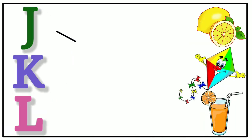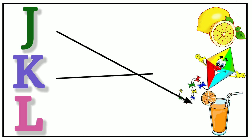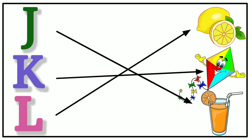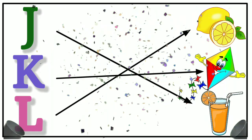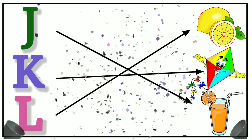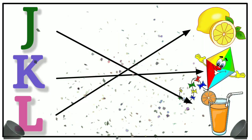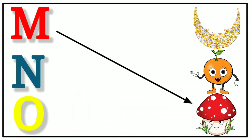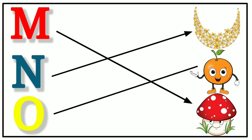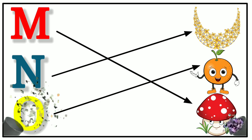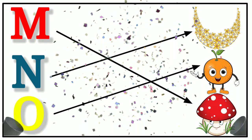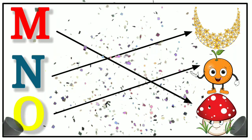J for juice, K for kite, L for lemon, M for mushrooms, N for necklace, O for orange.